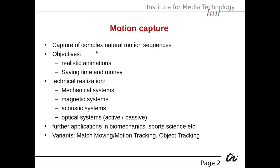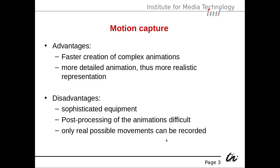This is the capture of complex natural motion sequences. The objectives are realistic animations and saving time and money by capturing them. The technical realizations are mechanical systems, magnetic systems, acoustic systems, and optical systems, which can be active or passive. Further applications are in biomechanics, sports, and science. Variants include match moving, motion tracking, and object tracking, which we come to later.